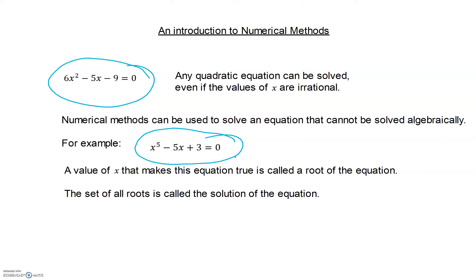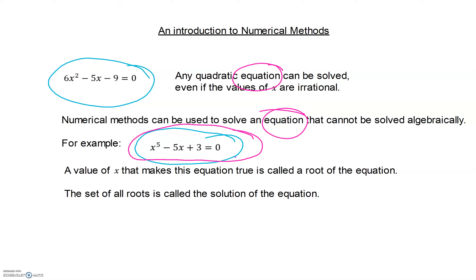We are going to be very careful with the language that we use, and you need to be very careful with this. We are solving an equation. Each equation is given so that it has one variable, x, and we are looking to find the value or values of x that make it true. If we find one value that makes it true out of many, then this is called a root of the equation. If we find the set of all of the roots, regardless of how many there are, then this is the solution of the equation.